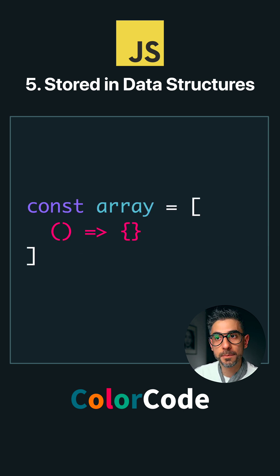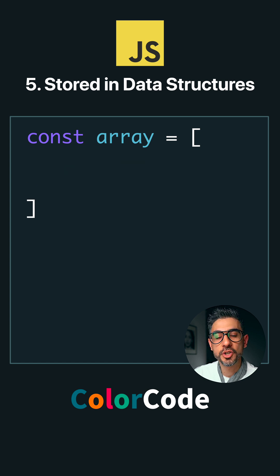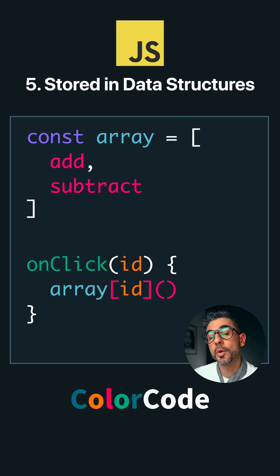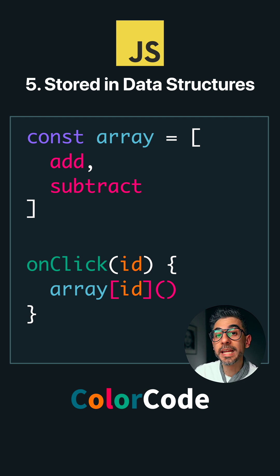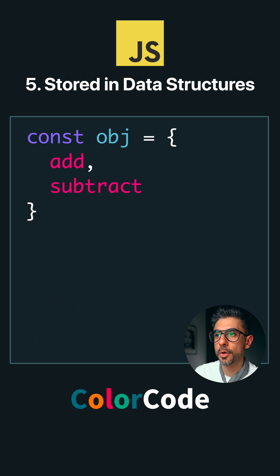Storing functions in arrays means we can manipulate application behavior dynamically at runtime. For example, based on a user's input — let's say I have two functions, add and subtract, inside an array — I can choose to execute which one at runtime. This also helps with code organization; we can organize related functions inside the same object, which really helps with code structure and makes it easier to manage.